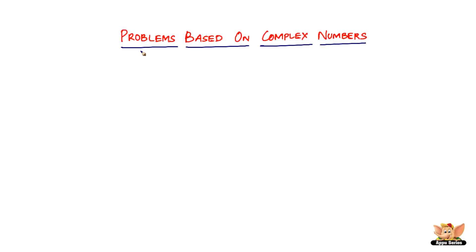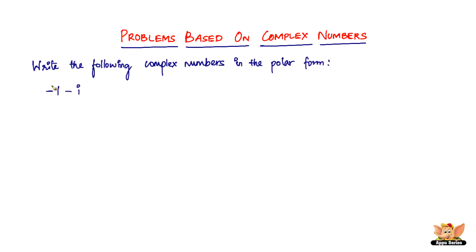In this video, let us continue to solve more problems based on complex numbers. Here we've got a problem which reads: write the following complex numbers in the polar form. The complex number we've got is minus 1 minus i, which we have to write in the polar form.